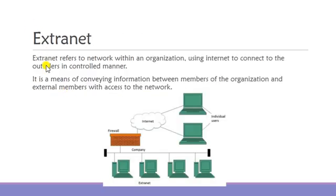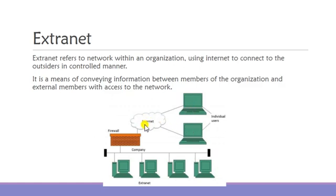Now let us look at extranet. Extranet refers to a network within an organization that uses the internet to connect to outsiders in a controlled manner. It is a means of conveying information between members of the organization and external members with access to the network. They make use of firewalls to prevent attacks, and they connect to each other in a controlled manner. Extranet functions within an organization and also outside an organization, unlike the intranet.